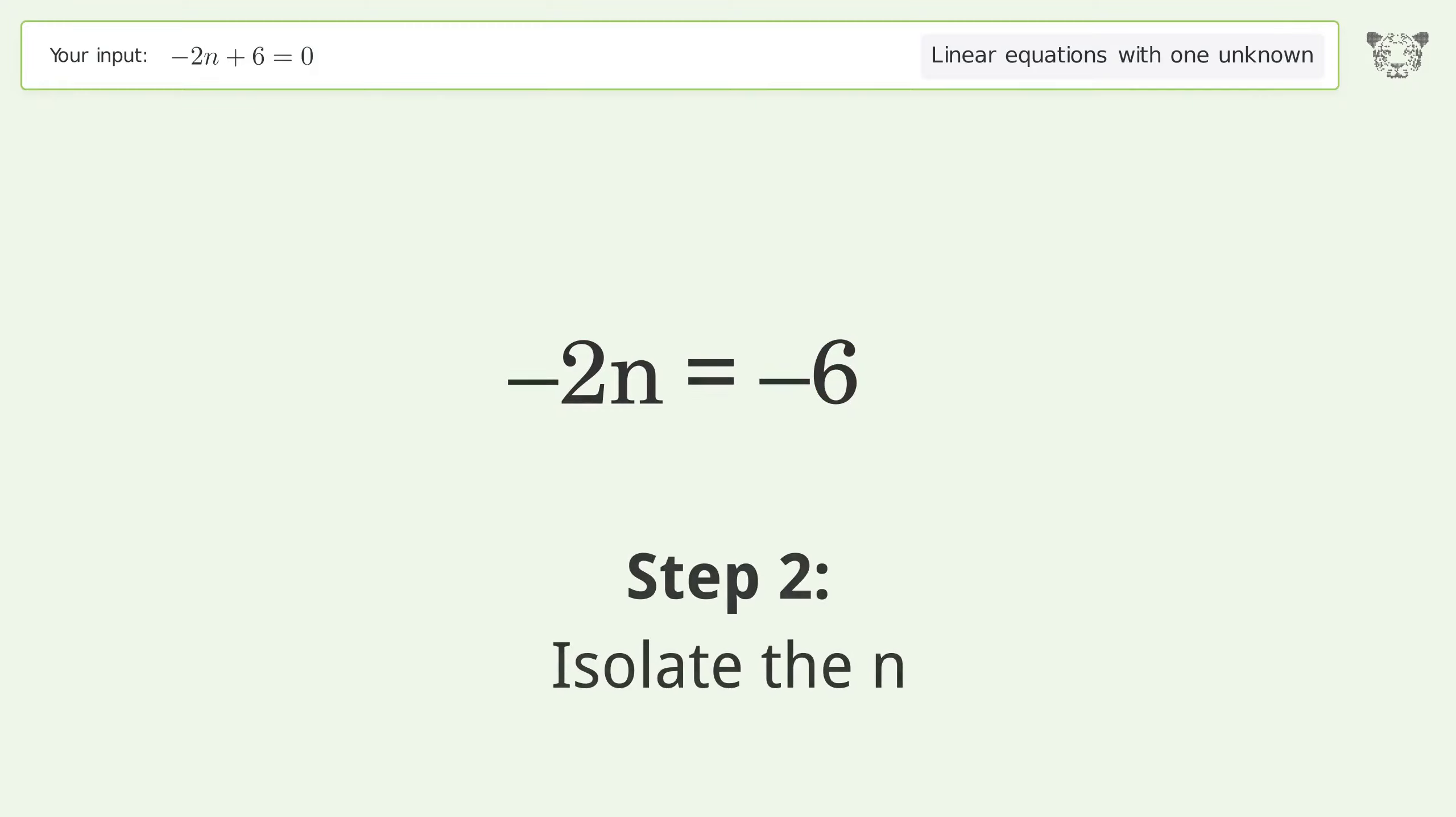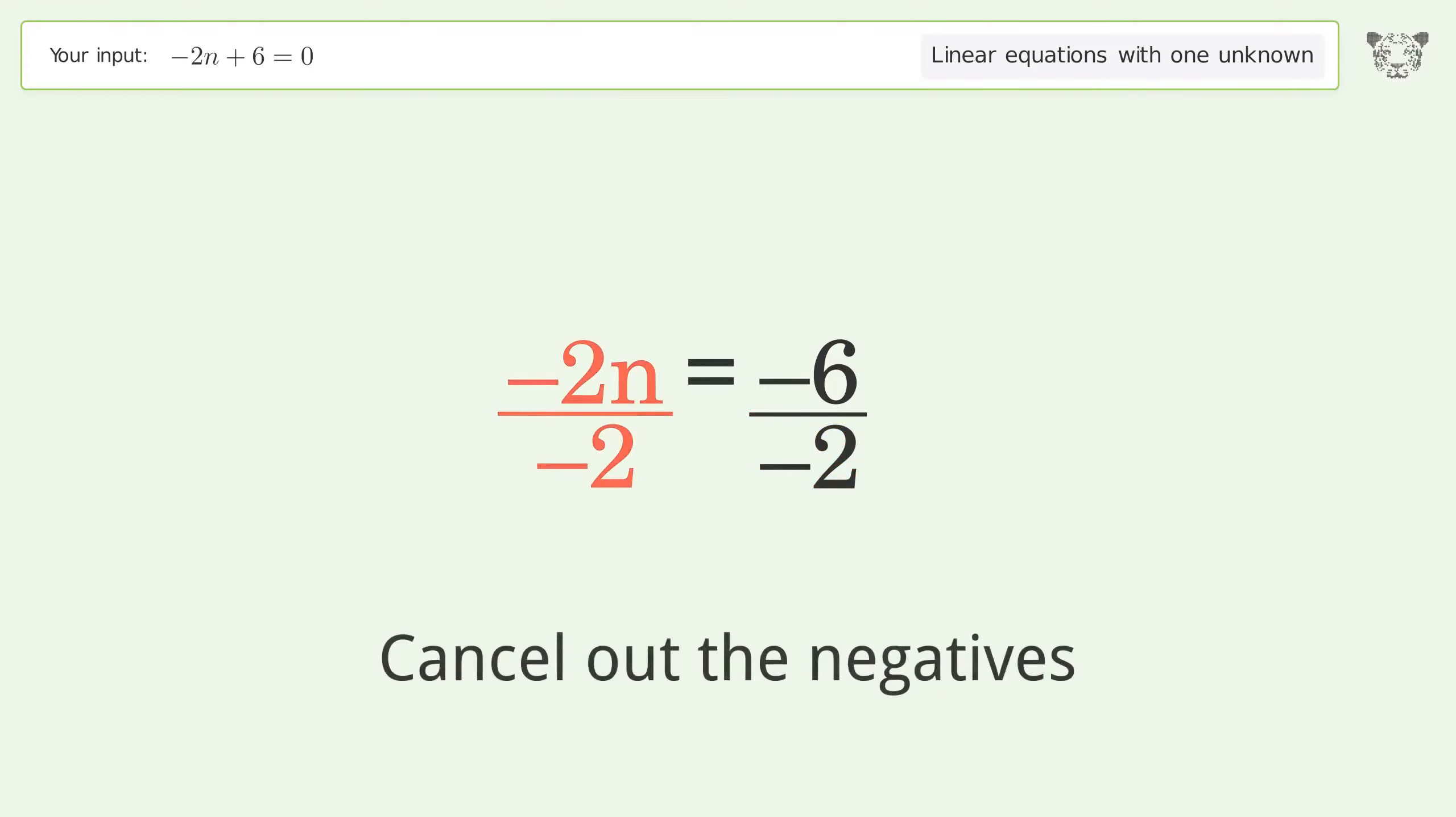Isolate the n. Divide both sides by negative 2. Cancel out the negatives.